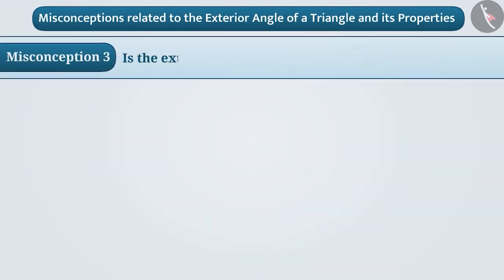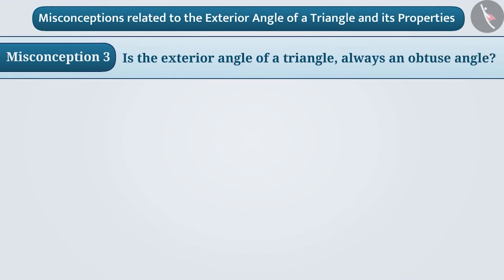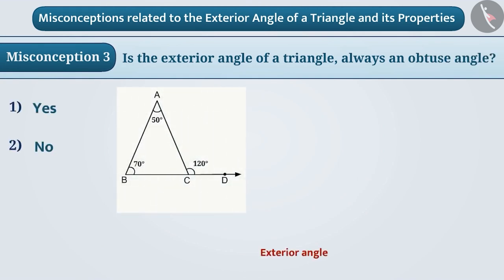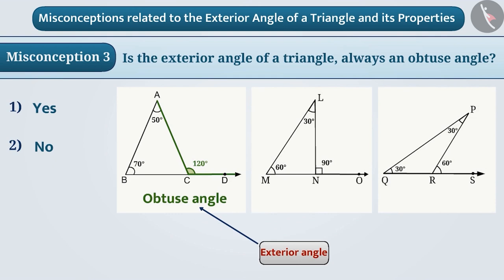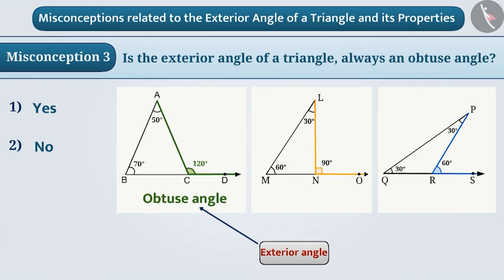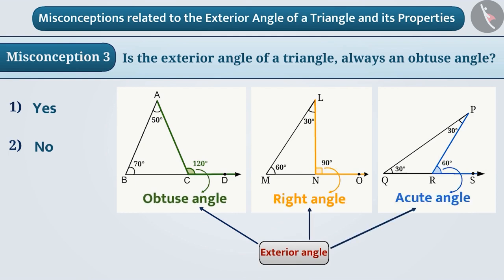Misconception 3: Is the exterior angle of a triangle always an obtuse angle? From examples, students often misjudge the exterior angle to be an obtuse angle, leading them to believe it is always obtuse. But this is a misunderstanding. Looking at the given triangles, you will observe that the exterior angle of a triangle can not only be an obtuse angle, but can also be a right angle or an acute angle. Hence, option 1 is the wrong answer and option 2 is the correct answer.